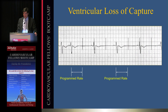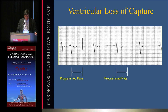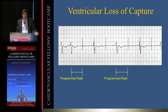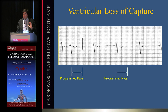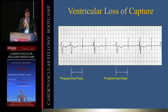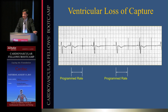Ventricular loss of capture is seen when pacing spikes are not followed by QRS complexes. The cycle length is consistent, confirming the device is pacing at the programmed rate, but capture is absent. Causes include output programmed below threshold, lead dislodgement, lead perforation, or exit block — scar tissue forming around the lead tip. Steroid-eluting leads minimize this scar formation; exit block is more common with epicardial leads, which also have a shorter functional lifespan.